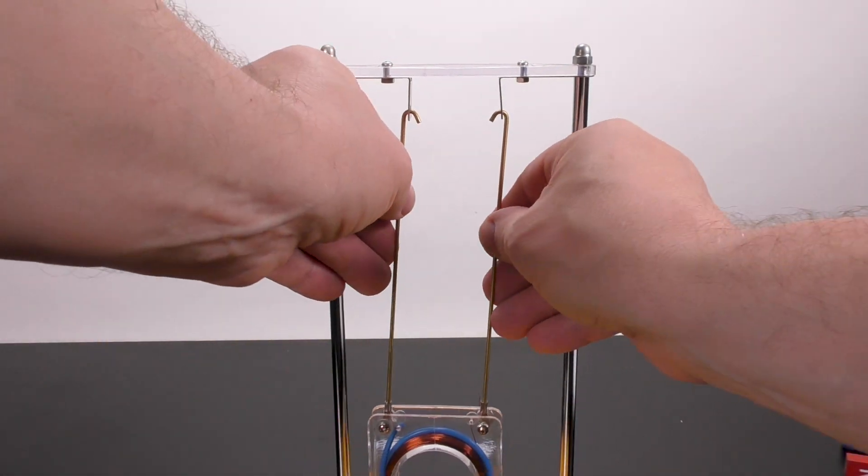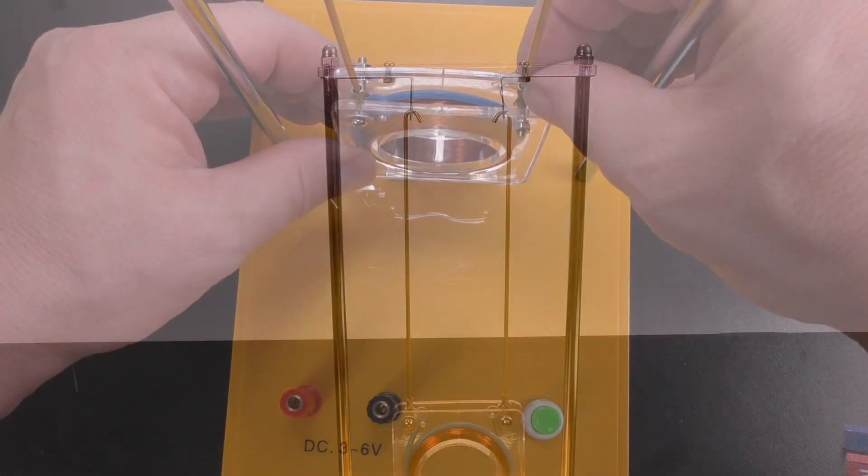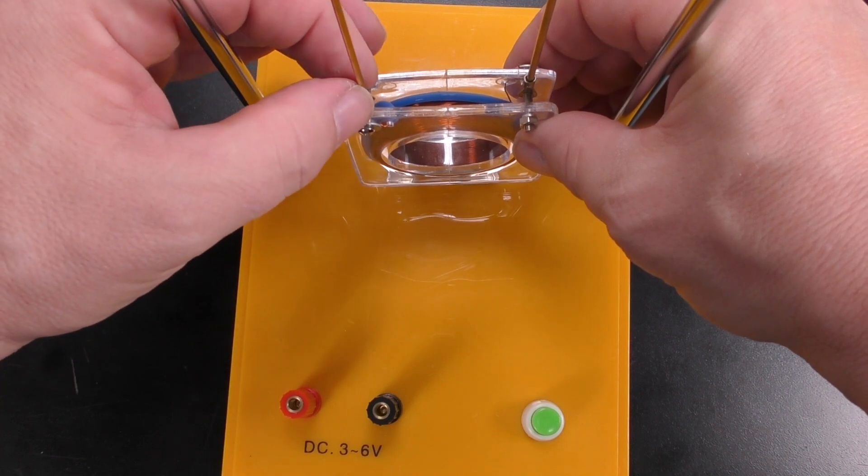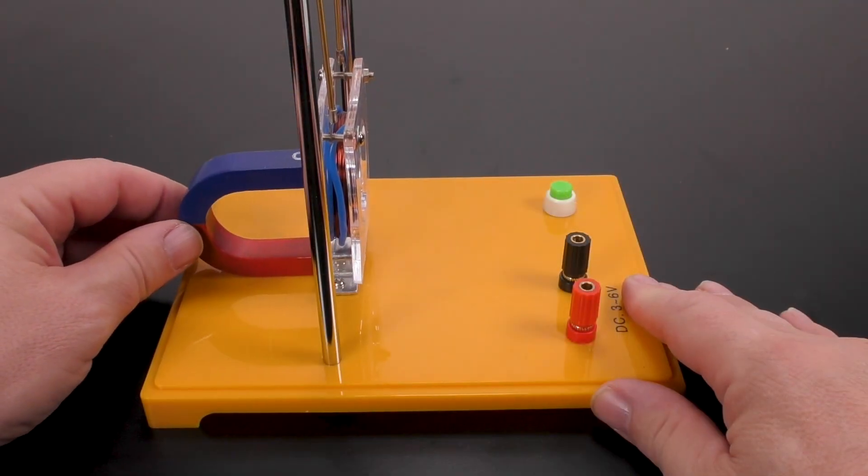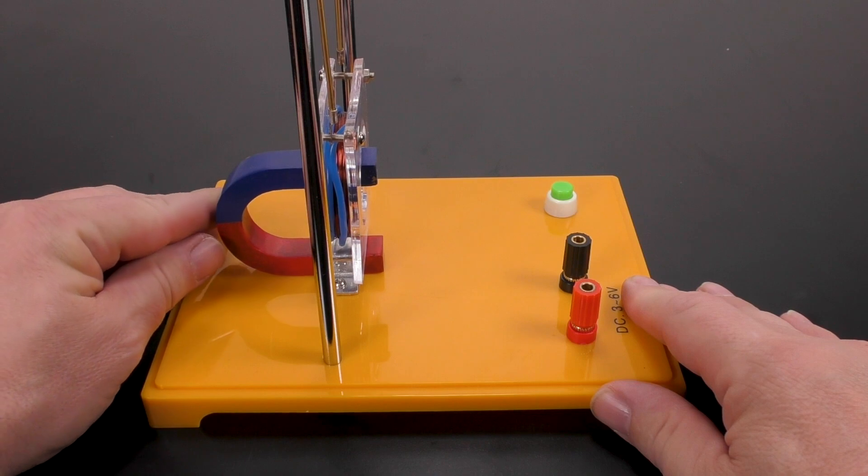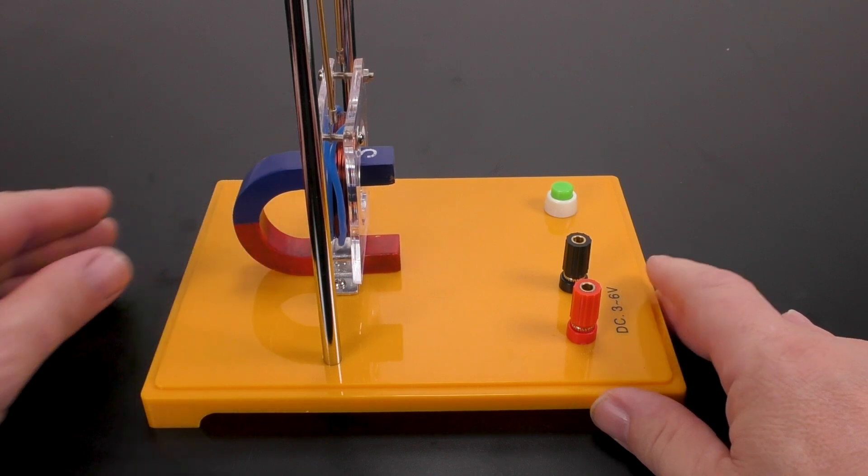Hang the swinging coil from the top supports. Center the support on the wire coils. Place the magnet into the base and make sure it extends about 1 cm beyond the coil.